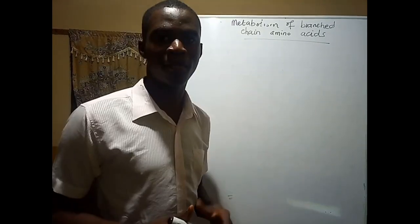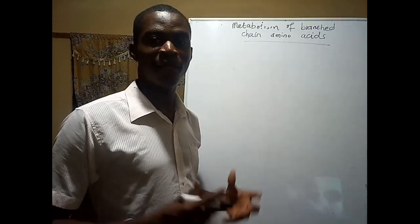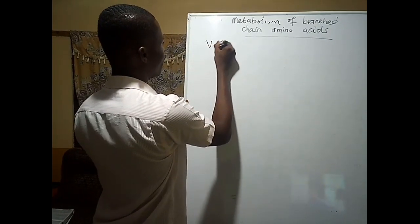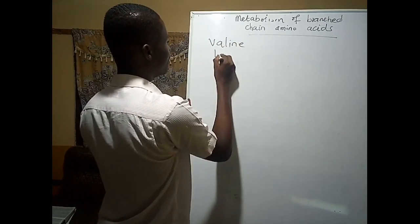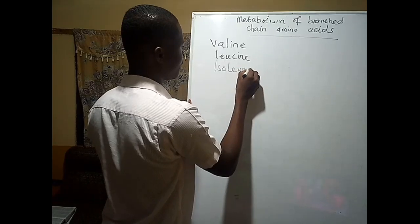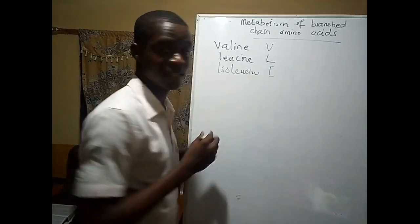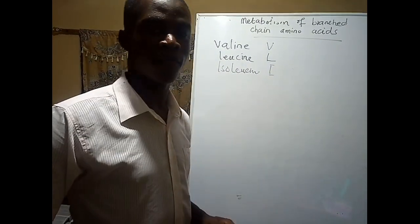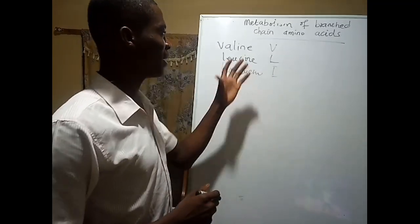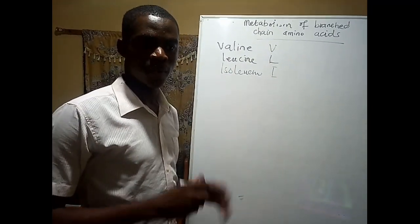There are three branching amino acids. When we talk about branching amino acids, we are basically talking about amino acids that have a branched aliphatic side chain. There are three of them, and I use the acronym VLI for these three branching amino acids.